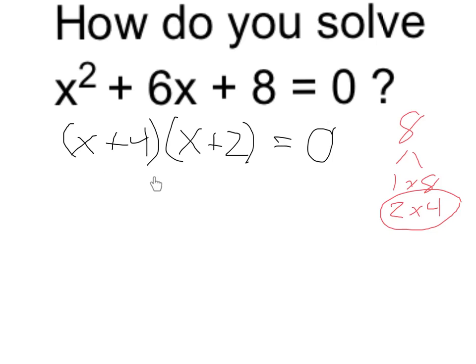But in this factored form, it's easier to find the solution because anything which makes this 0 or makes this 0 makes the whole thing 0. Therefore, our potential answers are x equals negative 4 or negative 2.